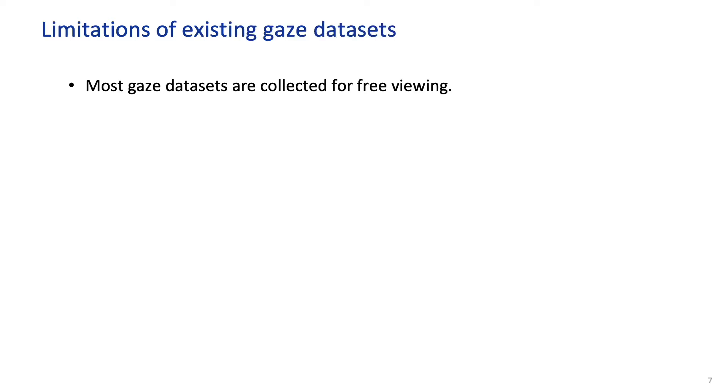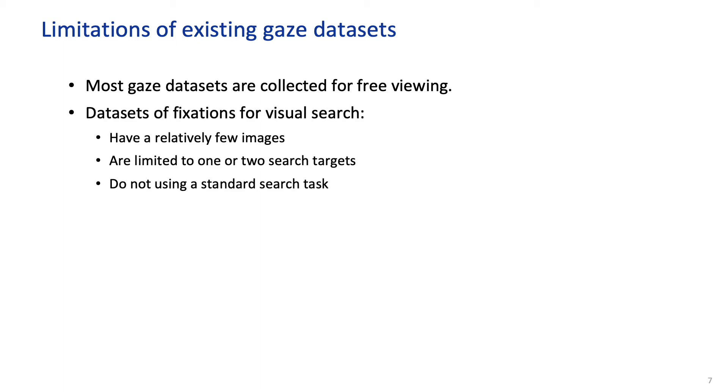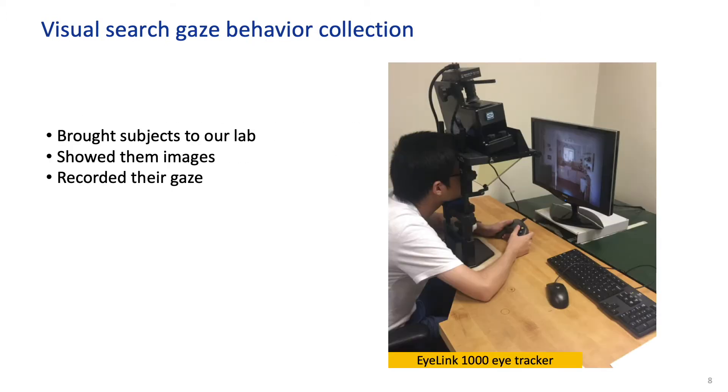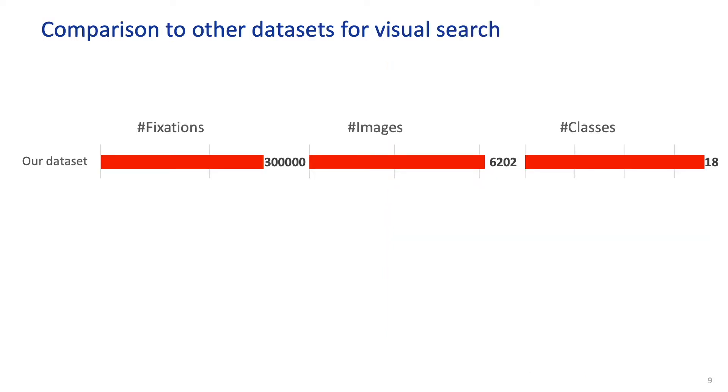Up to now, large-scale gaze datasets for free viewing are available. However, there's no such datasets for standard visual search with more than a few search targets. So we collected a large-scale gaze dataset for visual search under well-controlled conditions. In total, we collected 300,000 fixations from 10 subjects for more than 6,000 images of 18 search targets selected from MS COCO. This makes our dataset an order of magnitude larger than the scale of existing datasets.